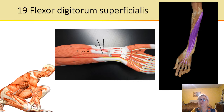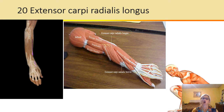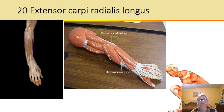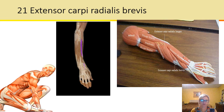Extensor carpi radialis longus — that's a tongue twister. It's going to extend; we know it has to do with the wrist because it says carpi, and the radius, and it must be long. So this is the long wrist stretcher of the radius. It extends the wrist and abducts the hand.